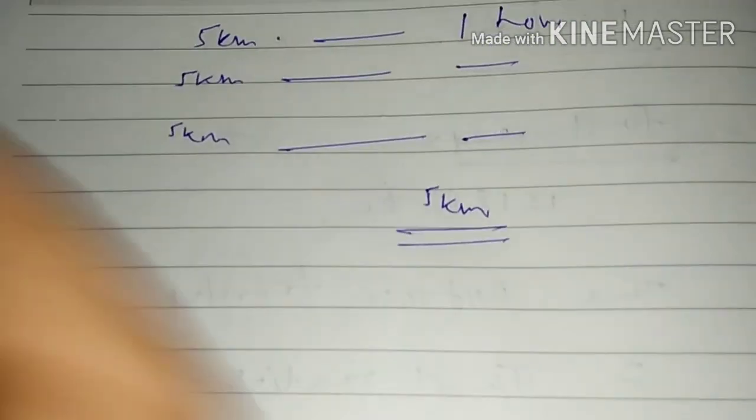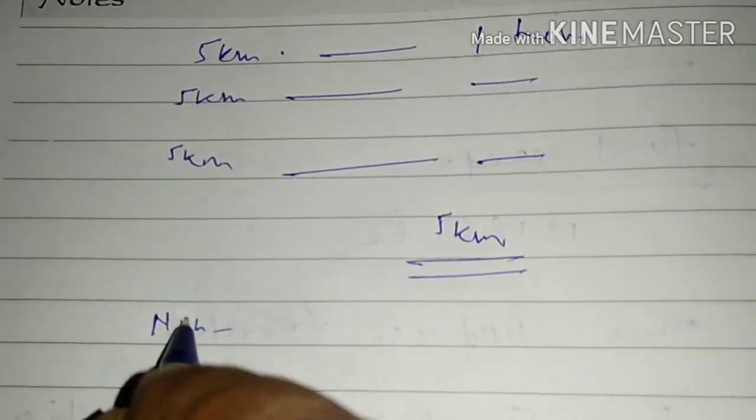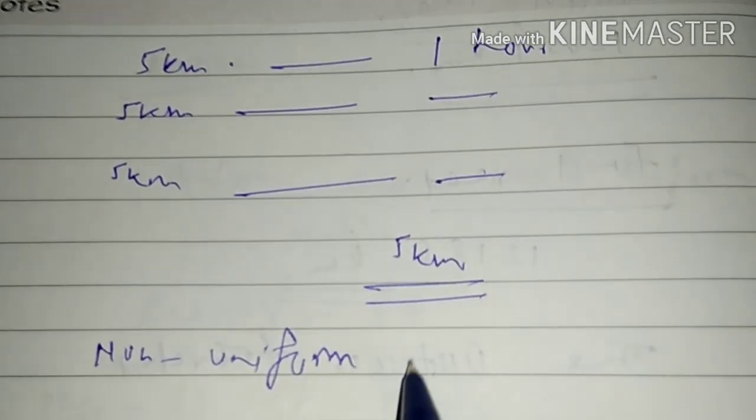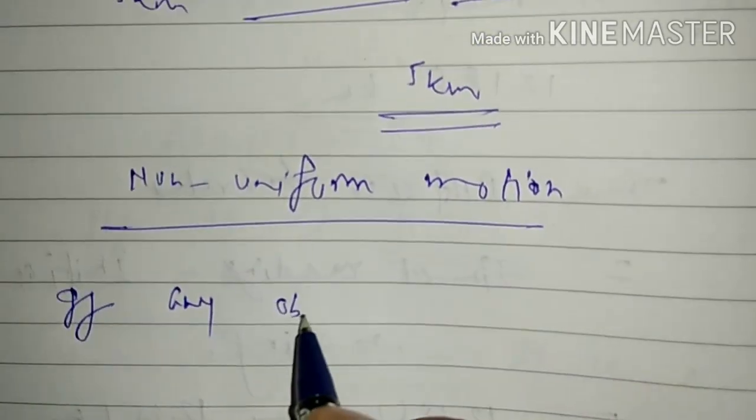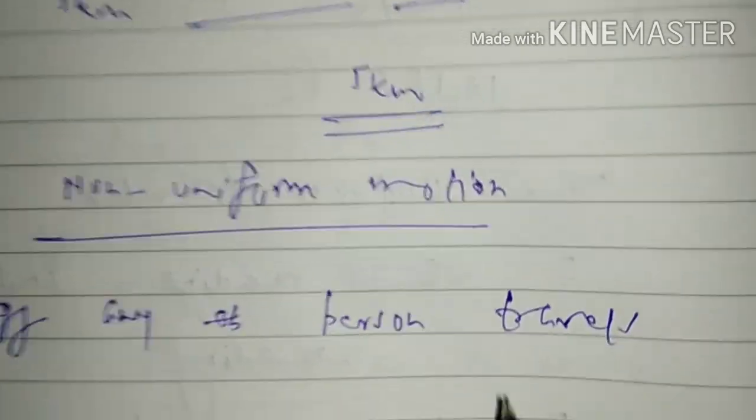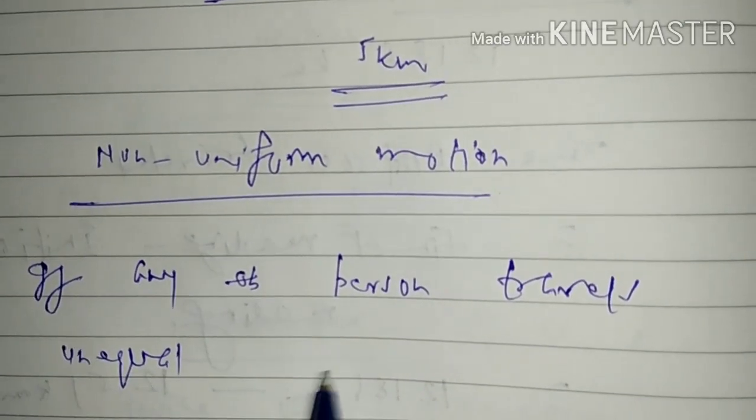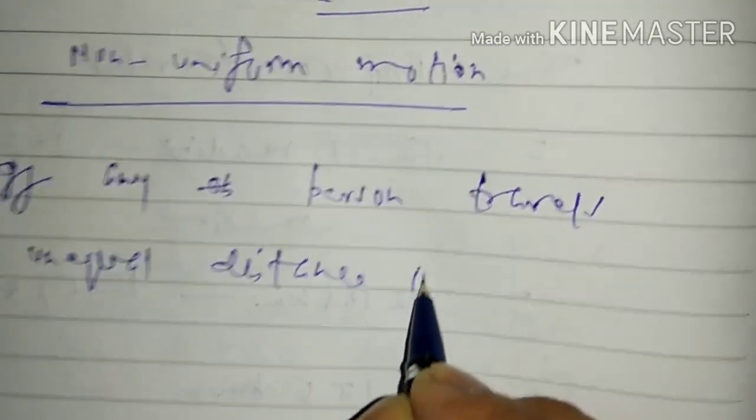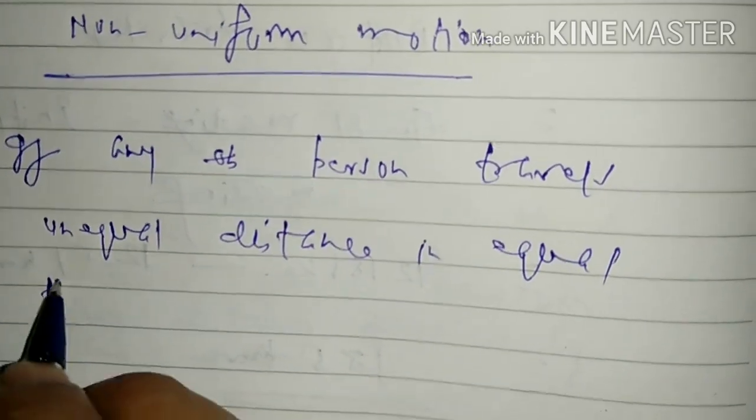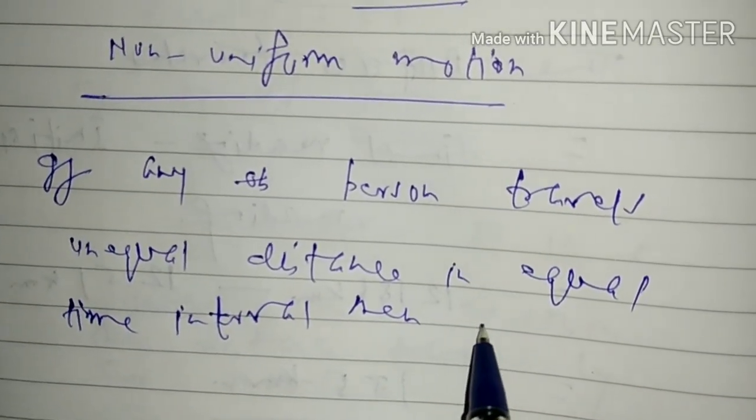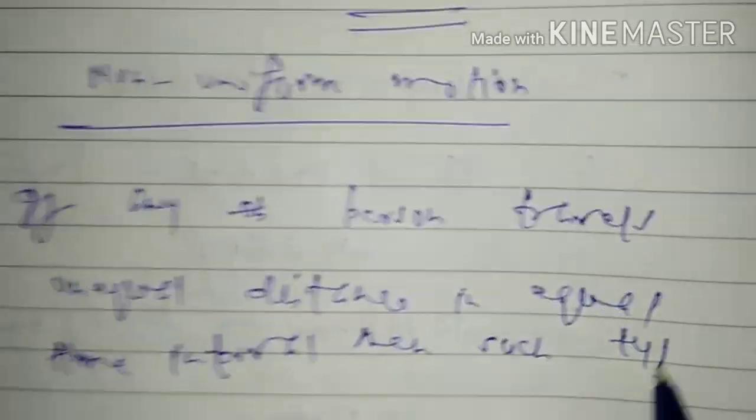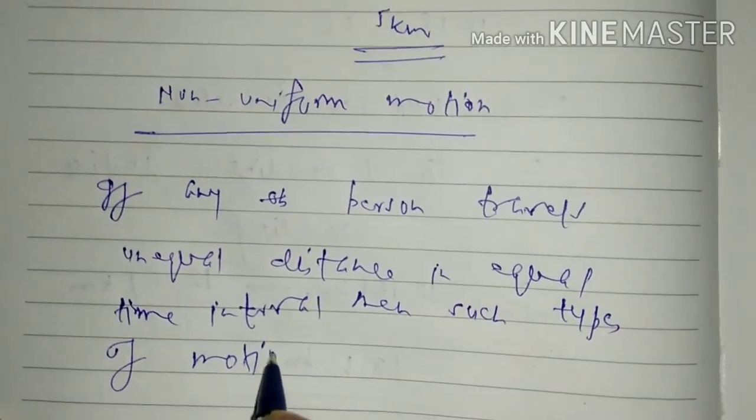Now what is the meaning of non-uniform motion? If any object or person or vehicle, if any person travels unequal distance in equal time intervals, then such types of motion is called non-uniform motion.